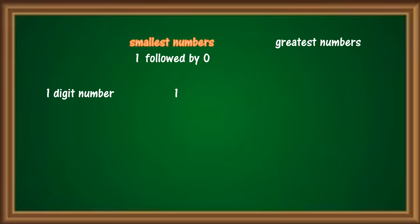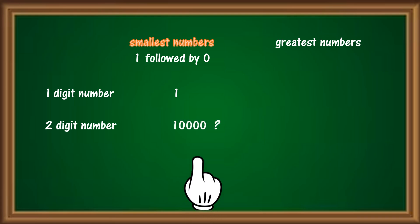Next, form the smallest 2-digit number. First, write 1, then 0. Do we need more 0s? No, because we have already got 2 digits. So, what is the smallest 2-digit number? 10.